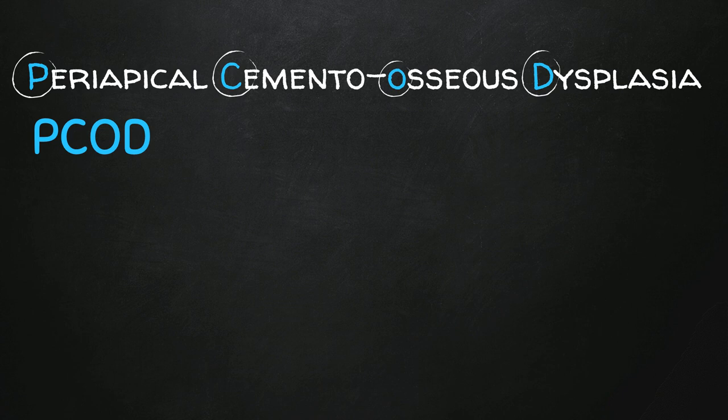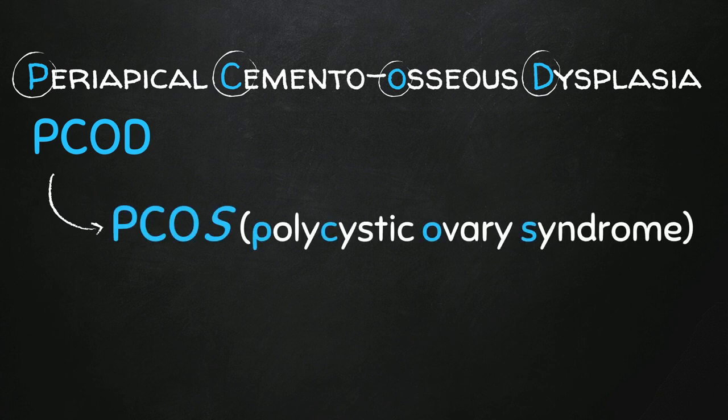If we replace the very last letter with an S, we get PCOS — polycystic ovary syndrome. A very well-known syndrome. How are we going to use this PCOS in our mnemonic?